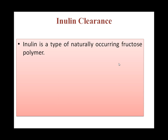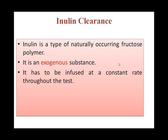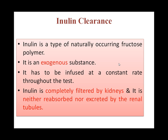Inulin clearance: Inulin is a naturally occurring fructose polymer and an exogenous substance that must be infused at a constant rate throughout the test. Inulin is completely filtered by the kidneys and is neither reabsorbed nor excreted by the renal tubules. Inulin is an extremely stable compound, so it is considered the original reference method for clearance testing. The main problem is that because inulin is exogenous, the infusion must be monitored throughout the test, so it is not widely applied today.